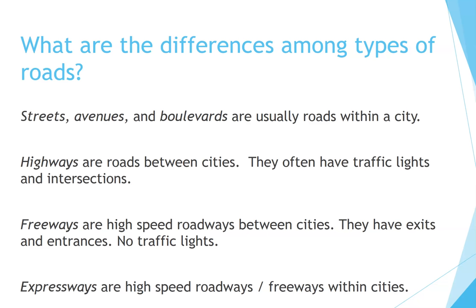What are the differences among types of roads? Streets, avenues, and boulevards are usually roads within a city. Highways are roads between cities — they often have traffic lights and intersections.